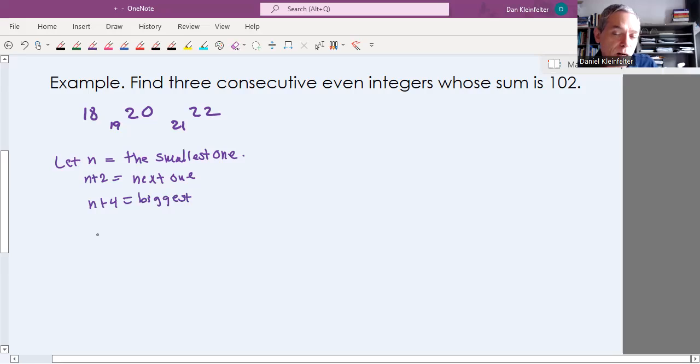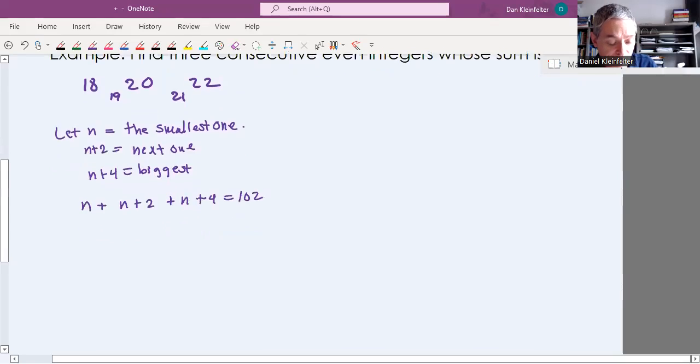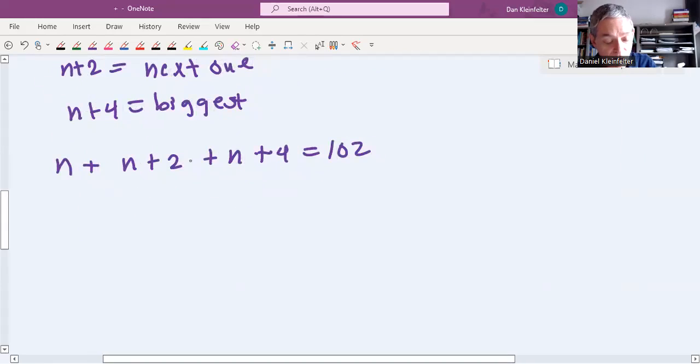Okay. The rest of this is going to play out really similarly to our last example. We need to add the three numbers up. Our smallest one, our middle one, and our biggest one. And they're supposed to add up to be 102. Okay. So then we'll solve our equation. We have 3n plus 6 is 102. Taking away the 6, 3n will be 96. So that n is 32. That's our smallest one. So our three numbers should be 32, 34, and 36. Those are the three numbers.